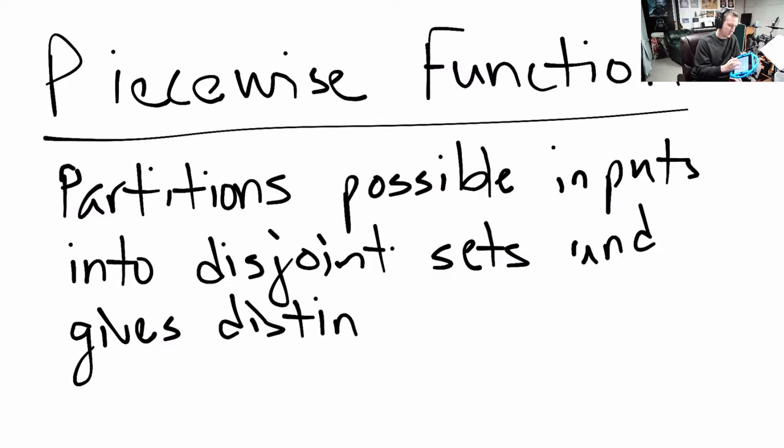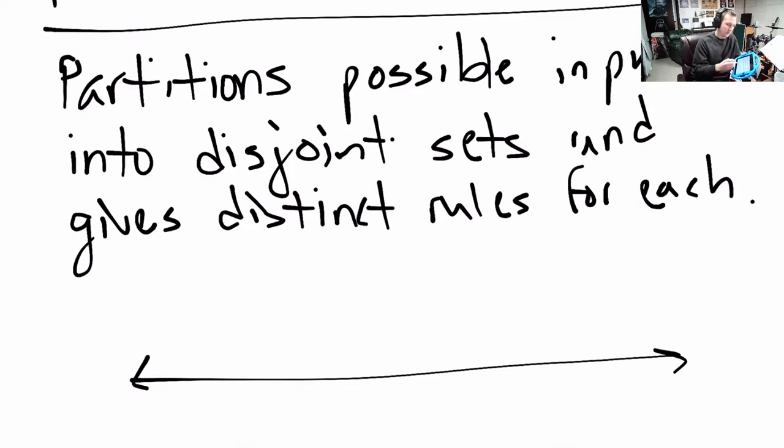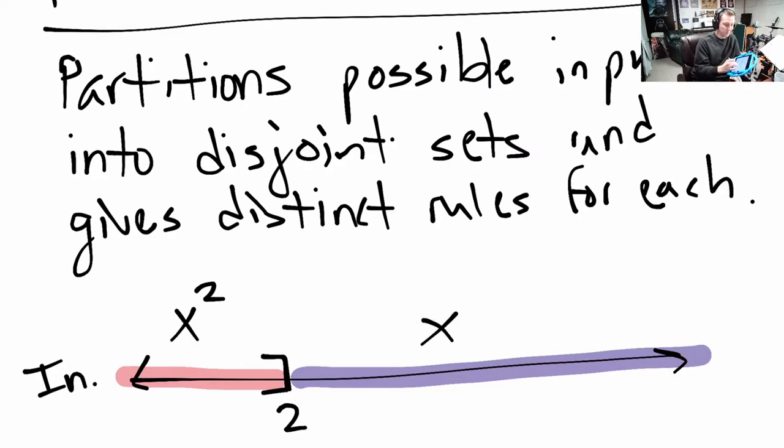A piecewise function partitions possible inputs into disjoint sets and gives distinct rules for each. So on that number line example, I break up the real lines and I'm going to use a number here to, I break up the real line, this is my input set. So let's say this is two. And so for anything to the left of two, I'm going to say the specific rule for my function is just square the number. That's the rule for any x that you pick less than or equal to two. For any number bigger than two, I'm going to say just subtract one. So if you pick a number over here, that's your rule. Square, that's your output. If you pick a number over here, here's the other rule. You just subtract one and that's the output. This is called a piecewise function because it breaks into pieces your possible inputs and uses distinct rules for each.